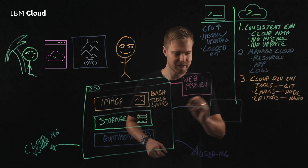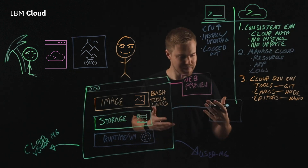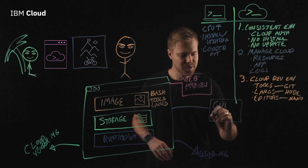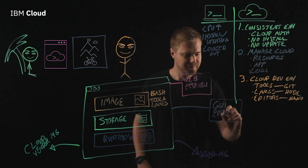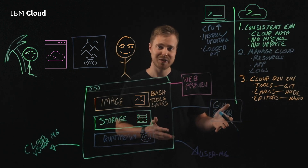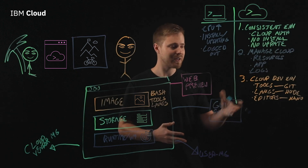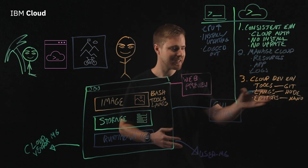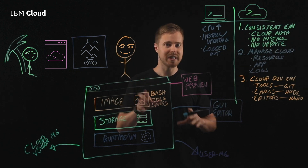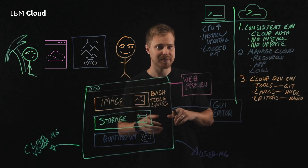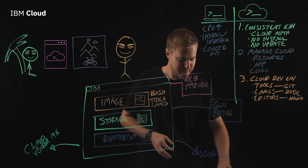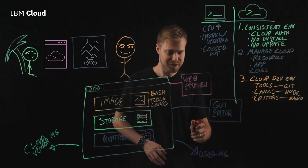The next feature a Cloud Shell may have is a GUI-based editor. Rather than a text editor like Vim or Nano, it's a graphical interface where you can edit files or scripts, and it may even include a debugger. It can be very useful when you're developing within a Cloud Shell.